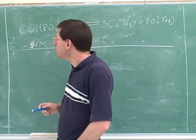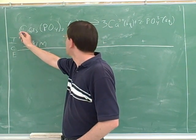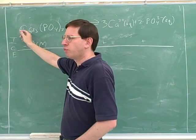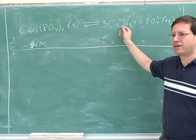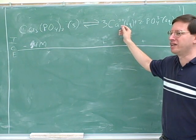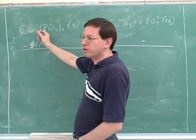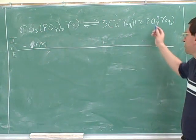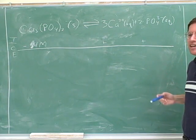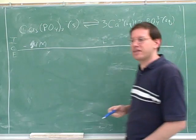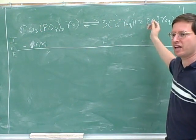Let's take this step by step. Suppose that I reacted one mole of this salt. If I reacted one mole of this salt, how many moles of calcium would that make? Not one — three. And if I reacted one mole of this salt, how many moles of phosphate would that make? Two. Not one, and not x. So you didn't need to say x. If I tell you I've used up one mole of this, you know exactly how much of each product we've made.